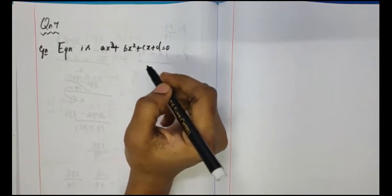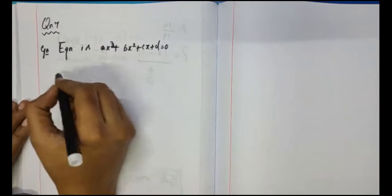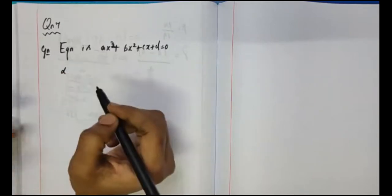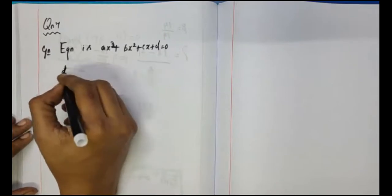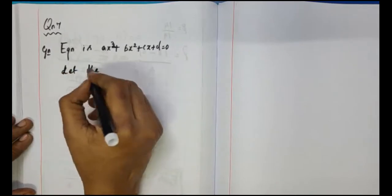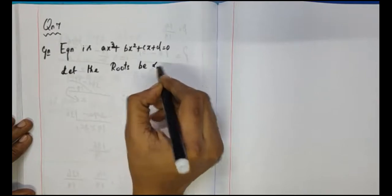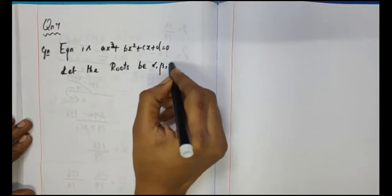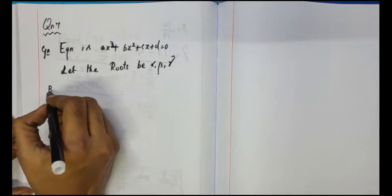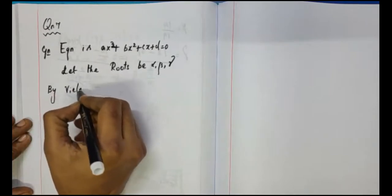In the equation, the roots are alpha, beta, gamma. Let the roots be alpha, beta and gamma. By Vieta's formula...